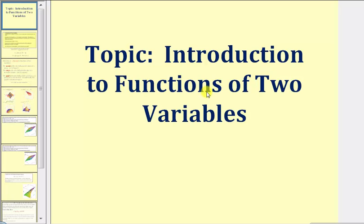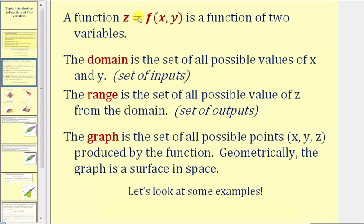Welcome to an introduction to functions of two variables. The function z equals f of x comma y is a function of two variables. The domain is a set of all possible values of x and y, or the set of all possible inputs, and the range is a set of all possible values of z from the domain, or the set of all possible outputs. The graph is a set of all possible points x comma y comma z produced by the function. Geometrically, the graph is a surface in space.